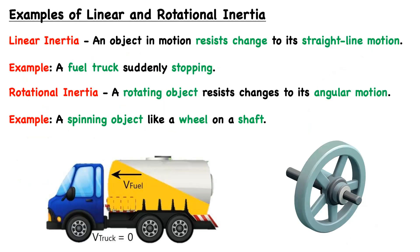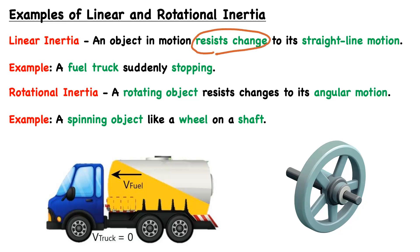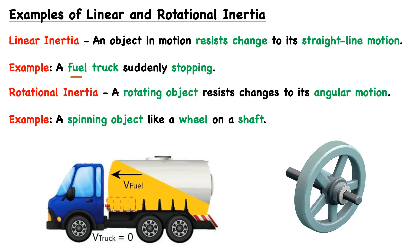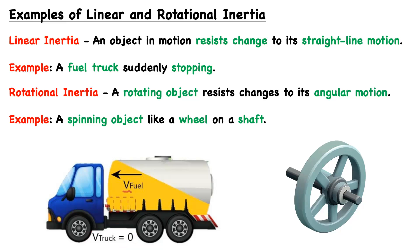Now let's look at examples of both linear and rotational inertia. Linear inertia is what we've already discussed in our airplane dropping a payload example. Linear inertia is defined as an object in motion resisting change to its straight-line motion. An example of linear inertia is that of a fuel truck suddenly stopping. As shown in the left illustration, the fuel truck suddenly stops, so its velocity equals zero once fully stopped. But the fuel inside has inertia and will want to continue moving in the same straight-line motion.